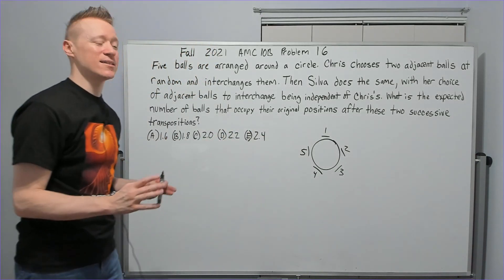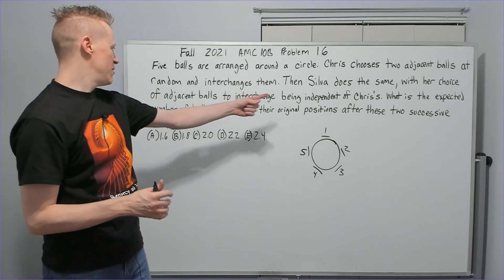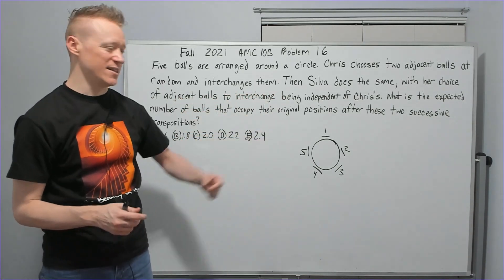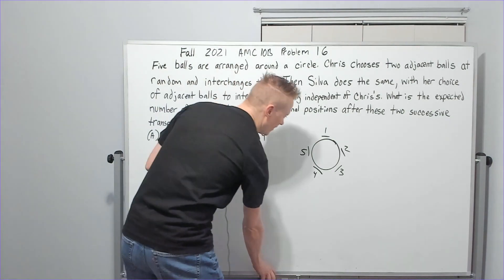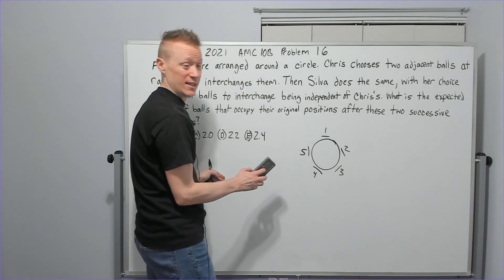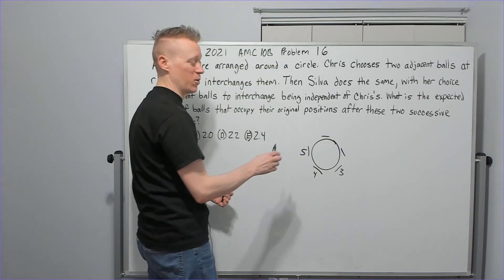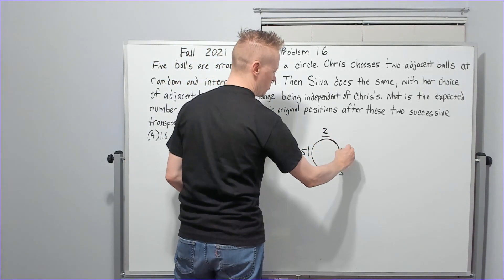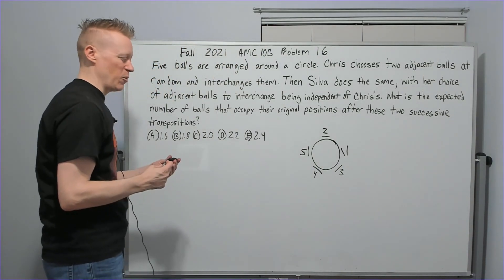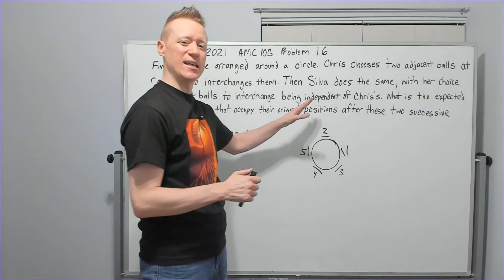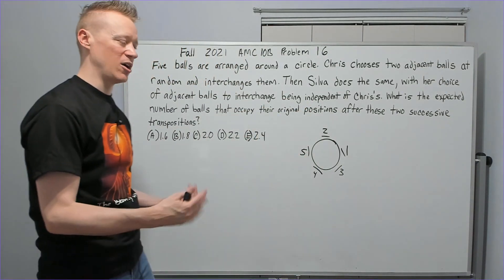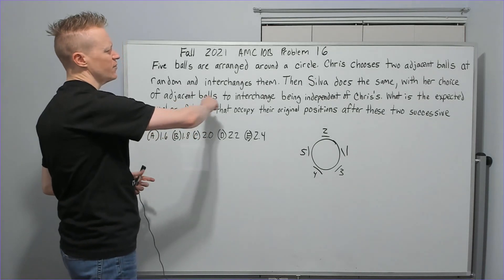The choice that he makes, okay, she's going to do the same with her choice being independent of Chris's. I'm going to pick one for Chris arbitrarily, which means that it doesn't really matter which one he picks for what we're about to do. So now I'm going to switch two and one. It wouldn't be any different if he had chosen any of the other ones because by symmetry all of it would work out the same.